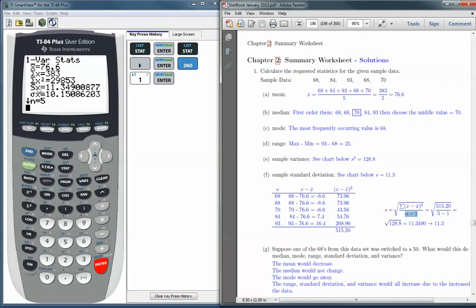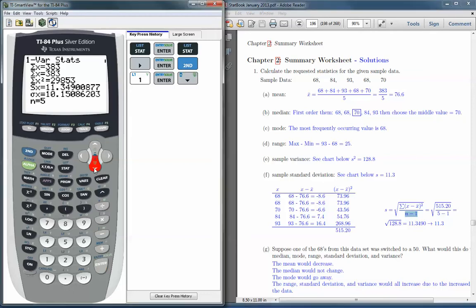So there's our sample standard deviation. And after that, we have the sample size, n equals 5. Now we have to scroll down using the arrows on the keypad. So we'll scroll down for more. And if we keep going all the way to the bottom,